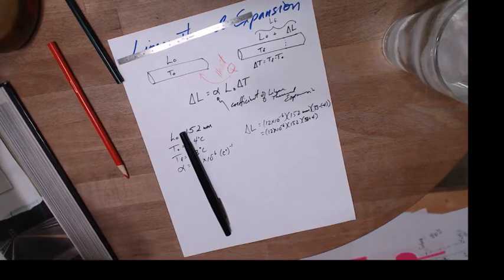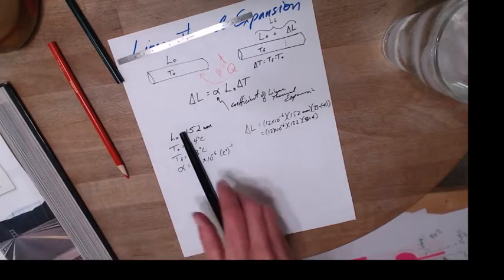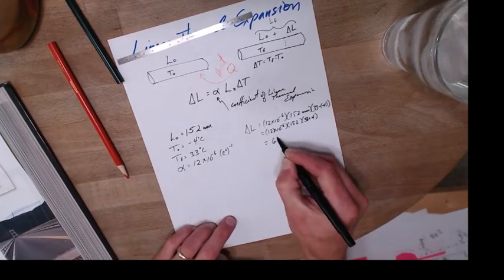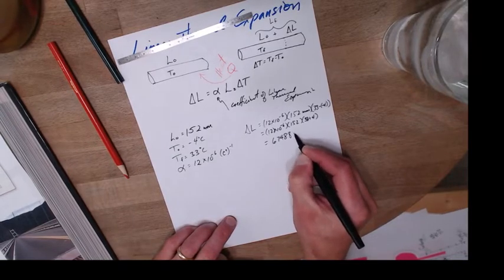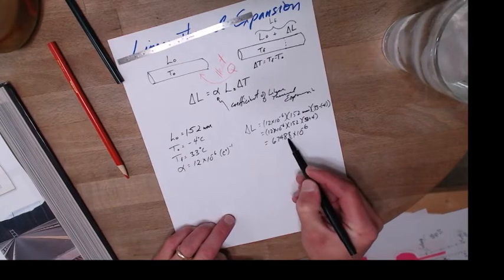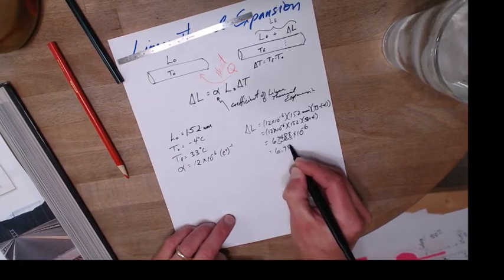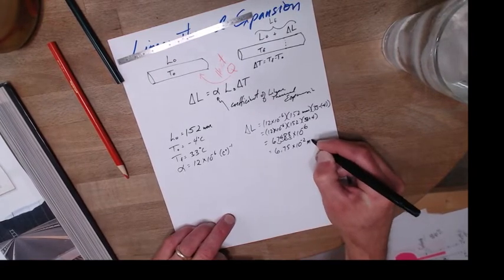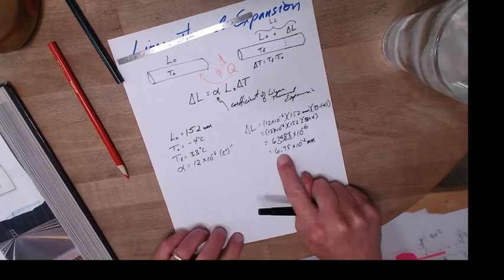So 12 times 152 times 37 is 67488 times 10 to the minus 6, which is 6.75 times 10 to the minus 2 millimeters. So it expands by just a little bit.